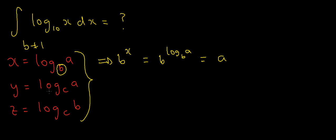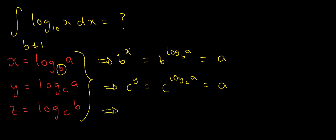I'll do exactly the same for the second equation, but exponentiating with c as the base. That gives me c to the y on the left, and c to the power of log base c of a on the right, which is just a. Likewise for the third equation: c to the z equals c to the power of log base c of b, which is just b.